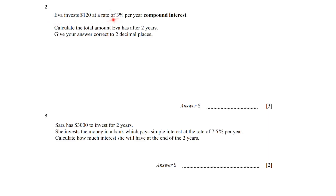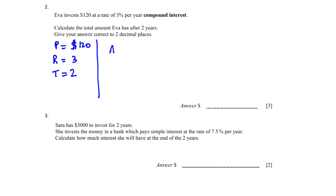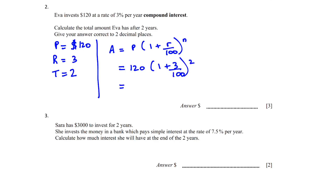Question 2: Eva invests $120 at a rate of 3% per year compound interest. Calculate the total amount Eva has after 2 years, giving your answer to two decimal places. It's a three-mark question. Principal = 120, R = 3%, N = 2. Using A = P(1 + R/100)^N and substituting: A = 120(1 + 3/100)^2 = 127.308, which rounds to $127.31.